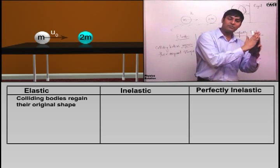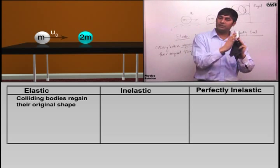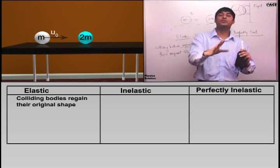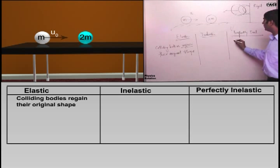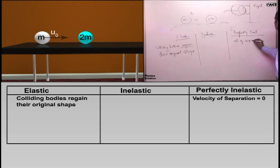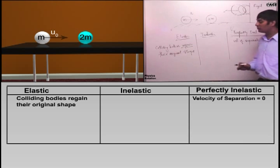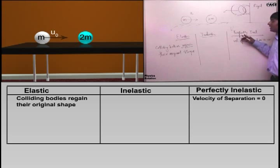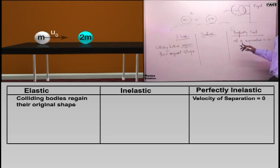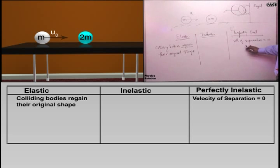Regain means to regain their original shape. They start moving together and their velocity of separation is zero. Velocity of separation means velocity after collision - the velocity along the common normal is the same. Such a collision is called perfectly inelastic. Generally, bodies stick together in this case, but not necessarily.